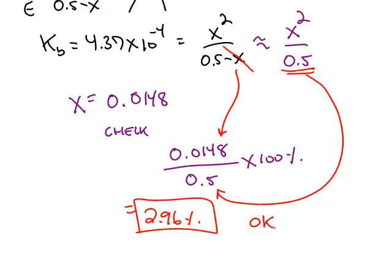So that tells us two things. It tells us that the approximation was valid, and it tells us that 2.96% of this base actually forms the products. It's a weak base, so it reacts very little. If this had been a strong base, the percent ionization would be complete. It would be 100%. 100% of a strong base ionizes.